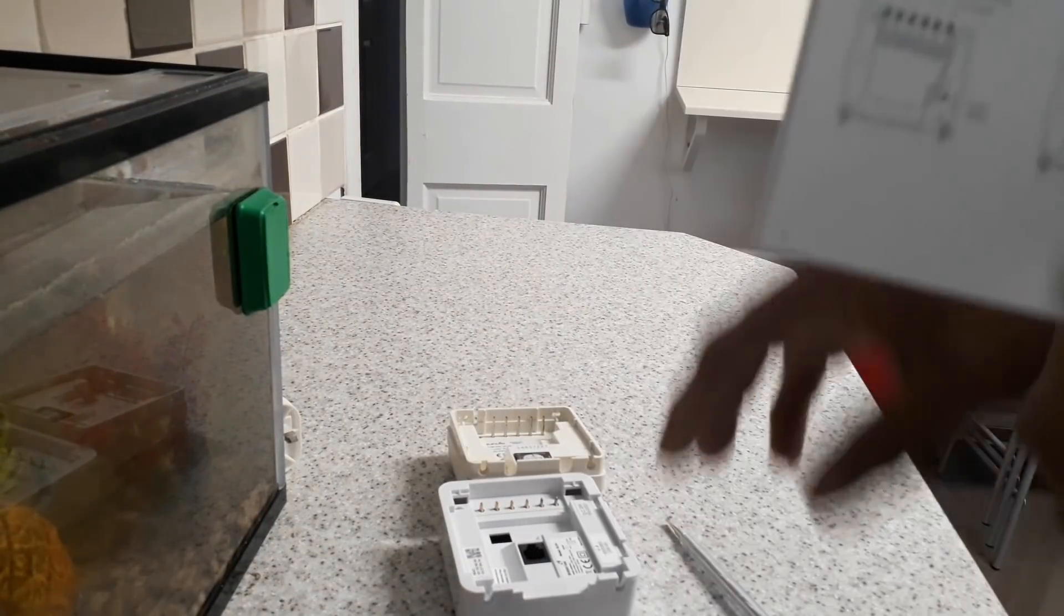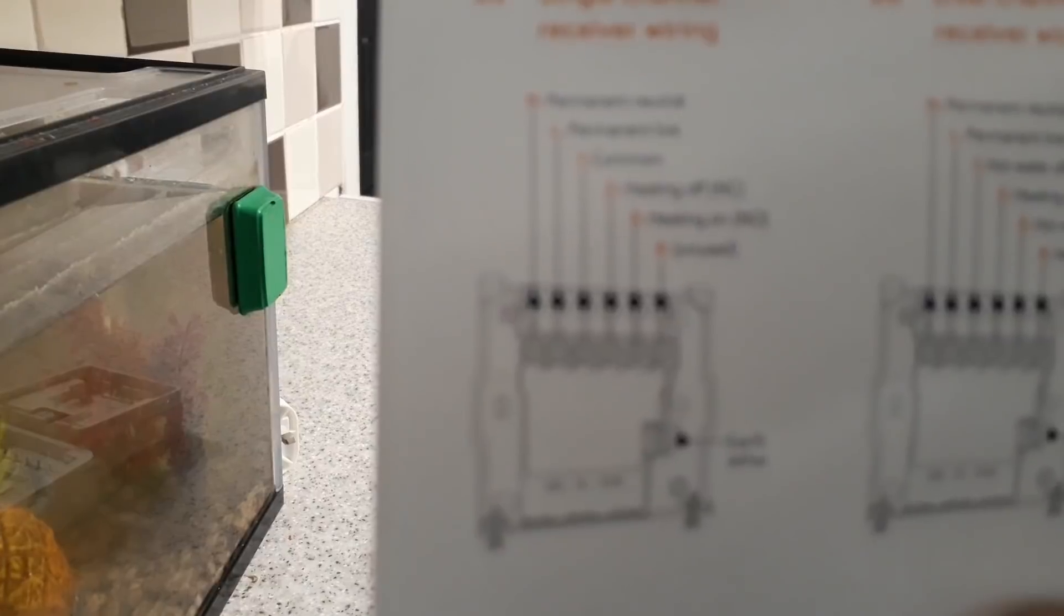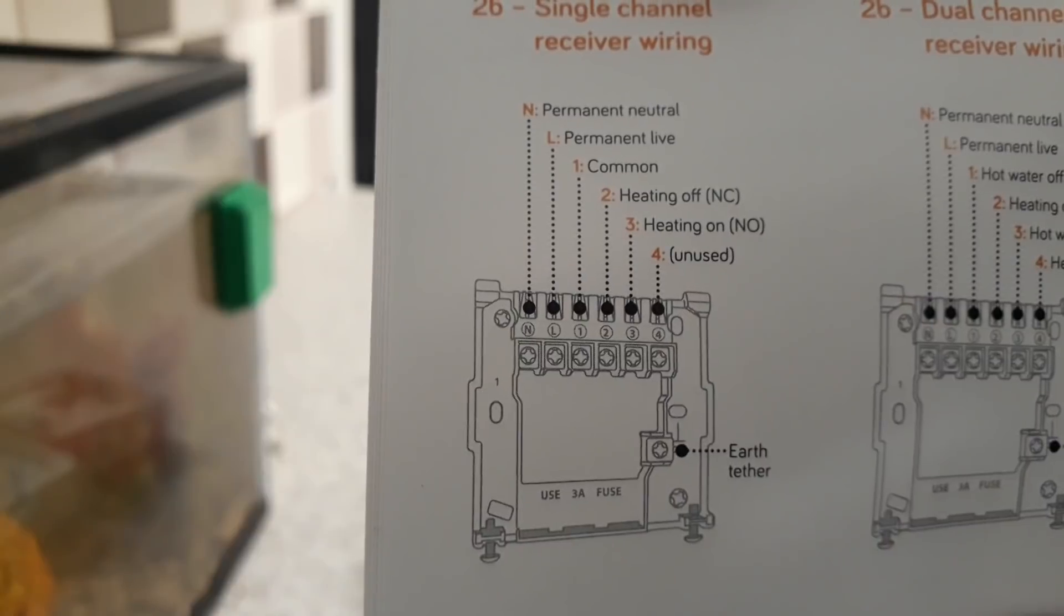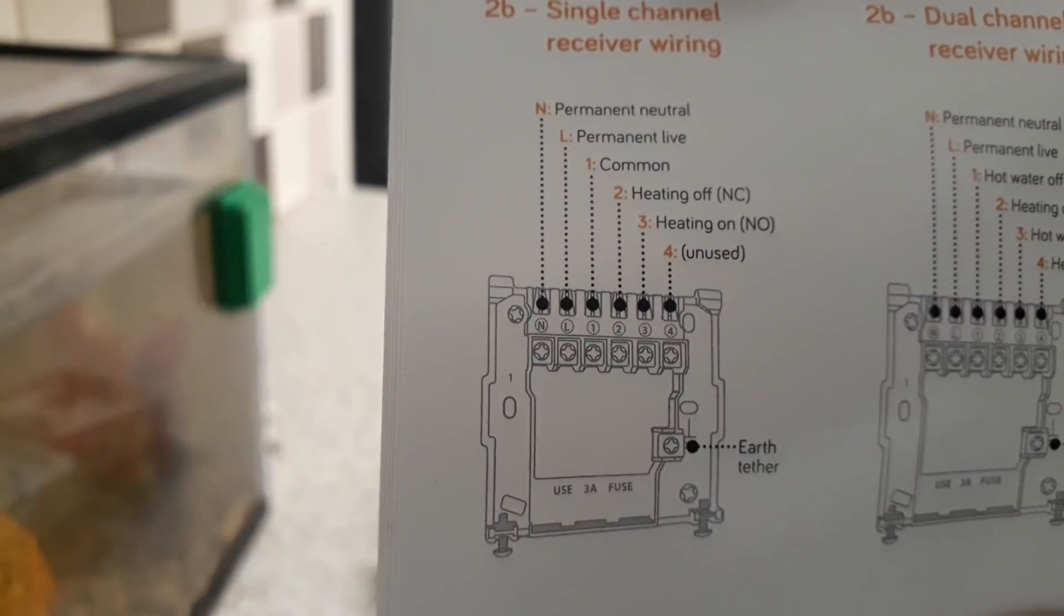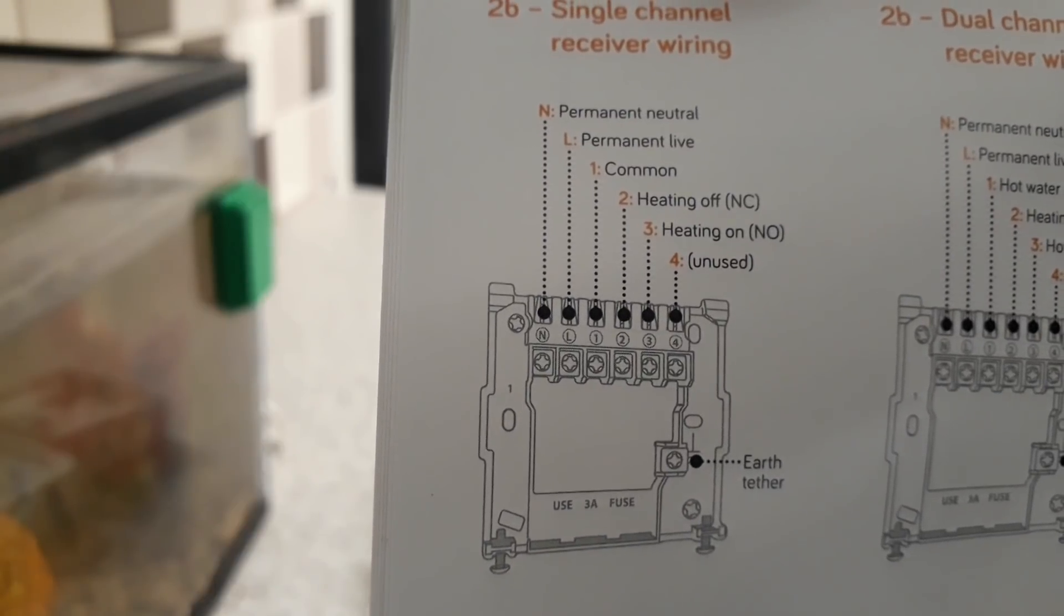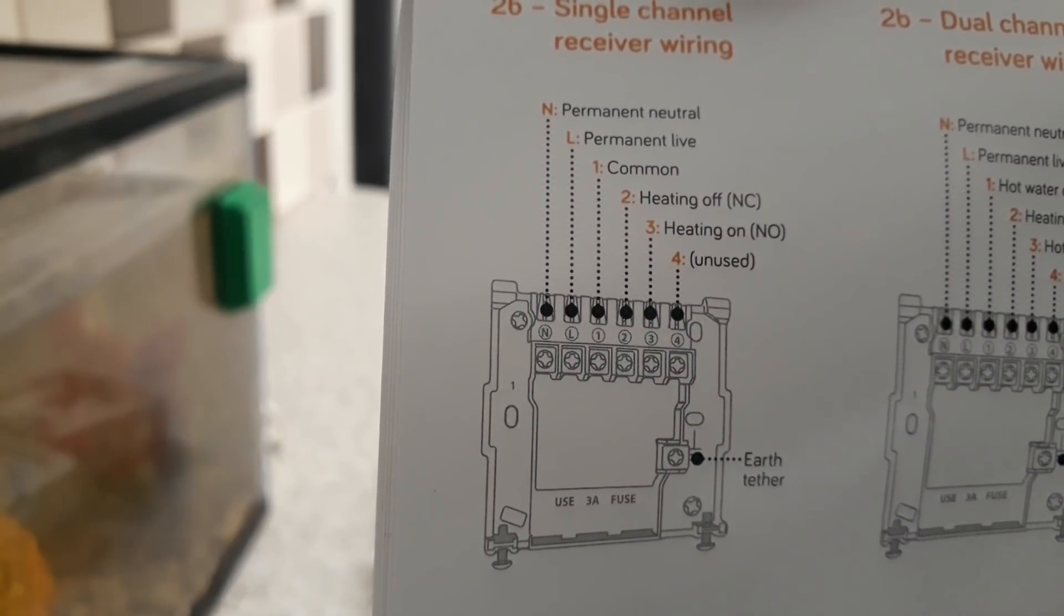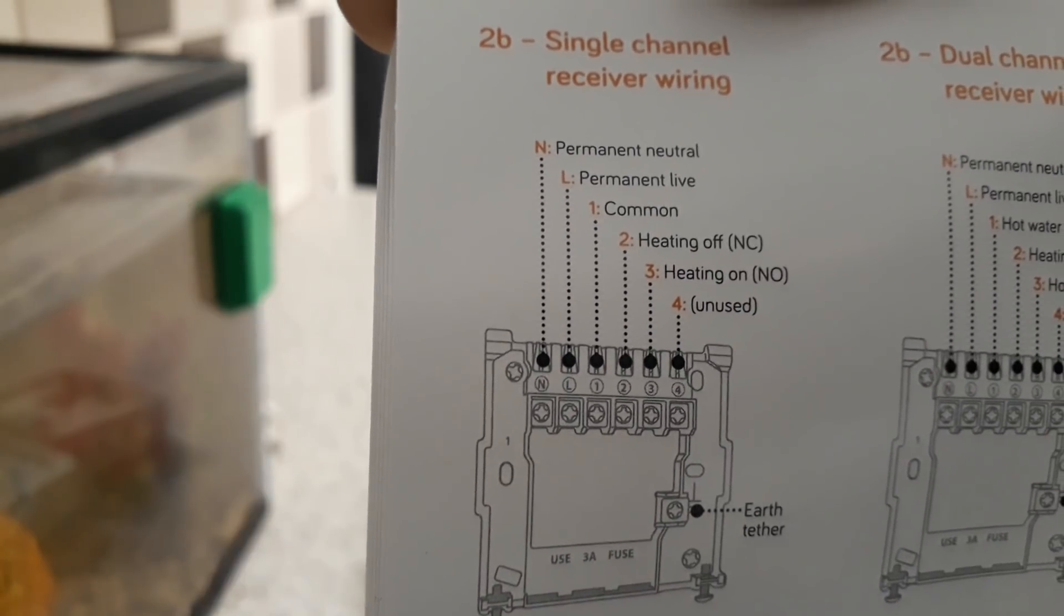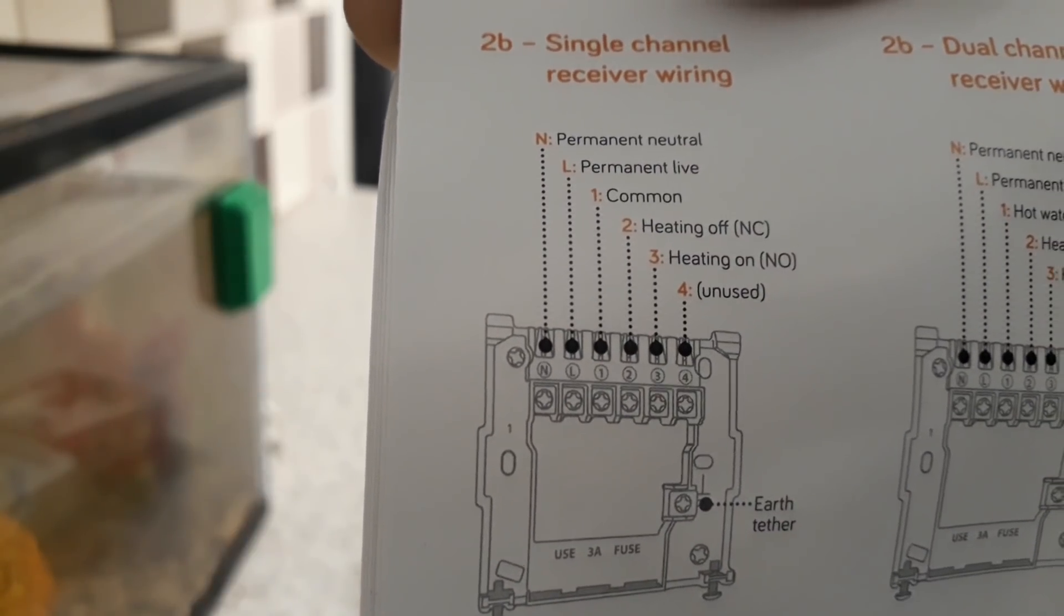On my old one, all I had compared to this one is the permanent live, the permanent neutral, I'm using the common and the on. I'm not using the off, and there's an unused one there. So I'm only four wires. I don't think there's any need to turn it off as such. All I want to do is make the heating come on when the temperature gets to the right thing. I think it turns itself off anyway. I'm going to wire it with the four wires I've got. I'm going to leave out the off one, and we're just going to put the common and the on one.